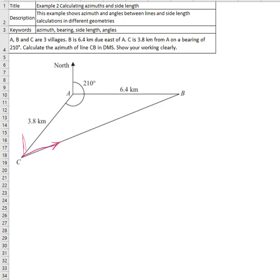This is the north, and this is the azimuth of line CB.